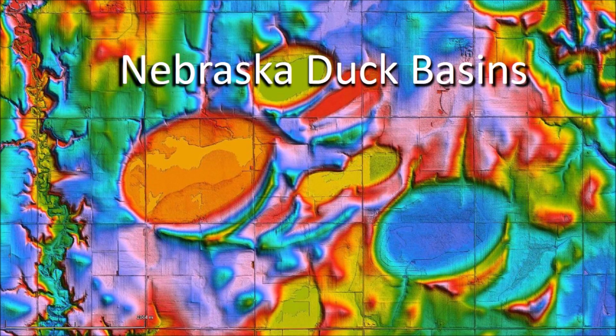Welcome to another episode of the Carolina Bay of the Day, where we study the secondary impacts made by glacier ice boulders that were ejected by one or more extraterrestrial impacts on the Laurentide Ice Sheet. This presentation discusses the Nebraska Rainwater Basins that have the same elliptical geomorphology as the Carolina Bays, but which are located at an elevation of about 560 meters above sea level.